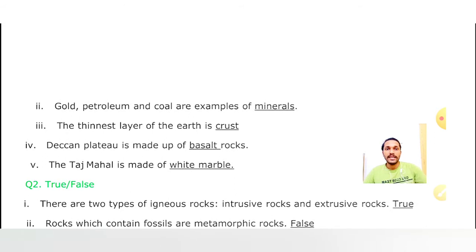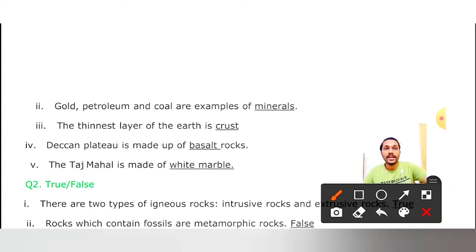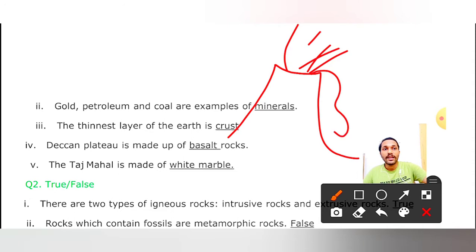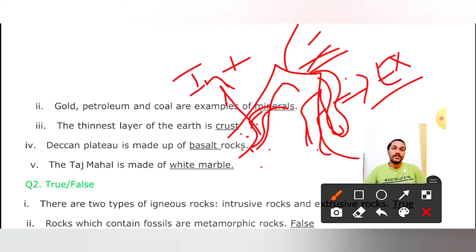True/False: There are two types of igneous rocks - intrusive and extrusive. Kya hamare igneous rocks do tarah ki hoti hain? Bilkul! Yeh intrusive aur extrusive dono sahi hain. Jab hamara volcanic eruption hota hai, toh jo magma bahar nikal jata hai, jab woh thanda hokar solid ban jata hai, toh woh bahar wala rock hamara extrusive rocks bolaya jata hai. Aur jo magma under rehta hai aur thanda ho jata hai, toh ander wale usko intrusive rocks bolte hain. Yeh bilkul sahi statement drakha hai.